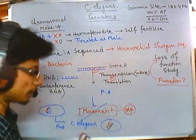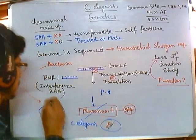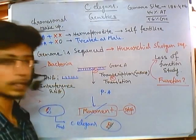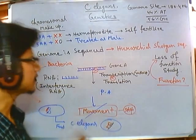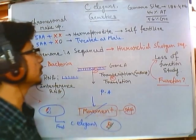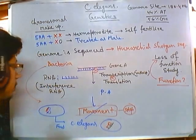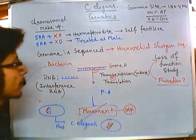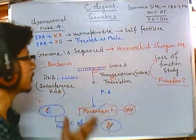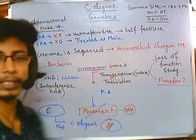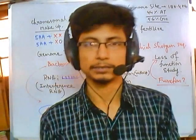By looking at the result of loss of function we can tell that yes, something is going on and this gene is responsible for the activity — in this case, movement. That is the study we can elaborately do using C. elegans, which is why C. elegans are important and widely utilized in this kind of research today. This has been a basic overview of the genetics of C. elegans. I hope this video helps you. Thank you.